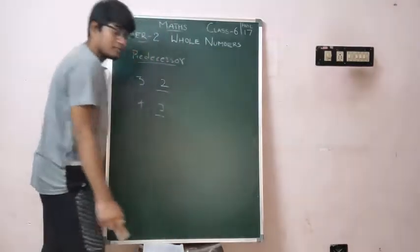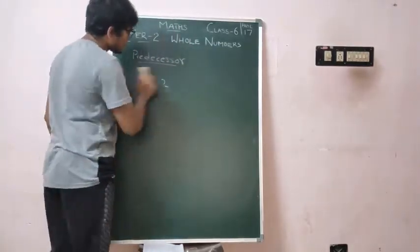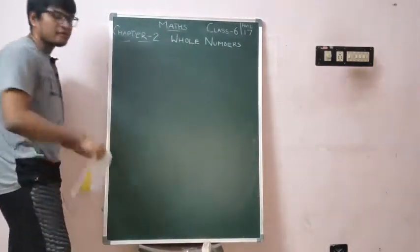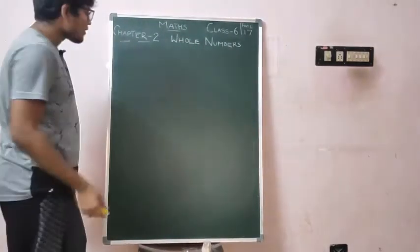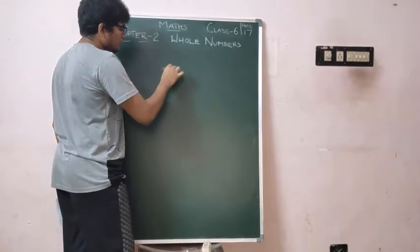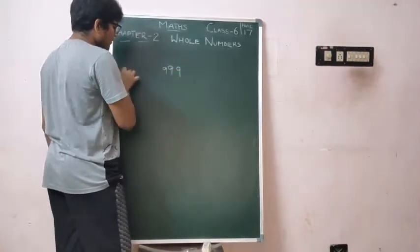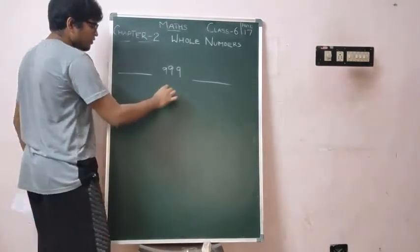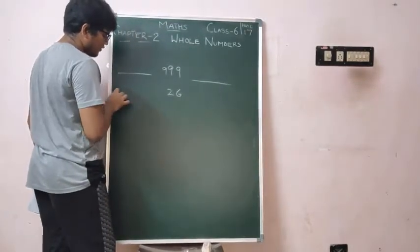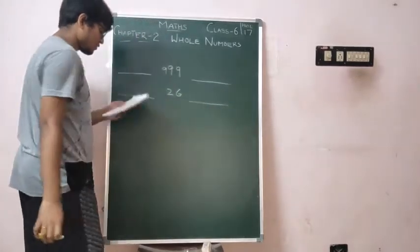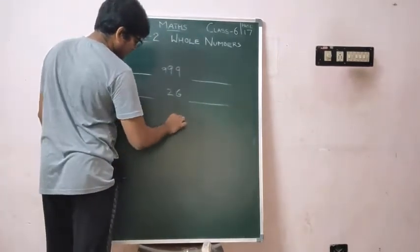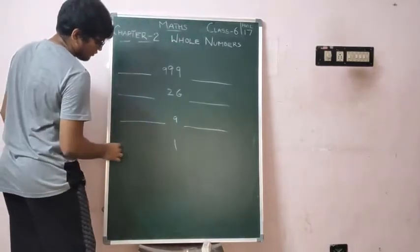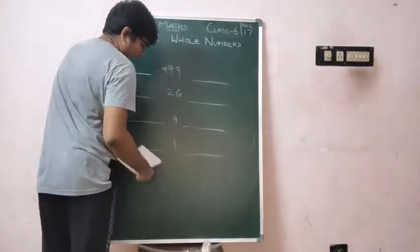Is this clear? Now can we do some examples? The question is: find the successor and predecessor of the given numbers — 999, 26, 9, and 1. For predecessor you subtract 1, and for successor you add 1.